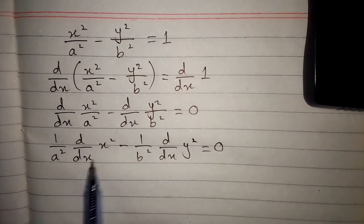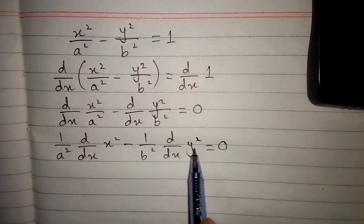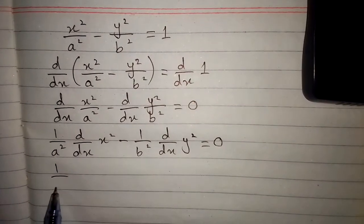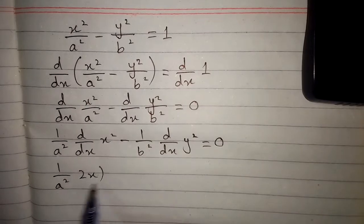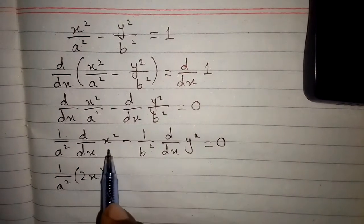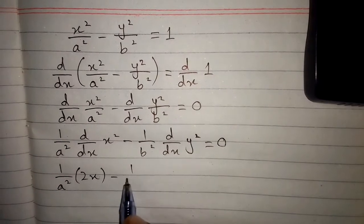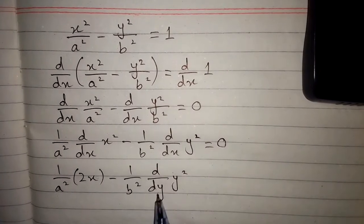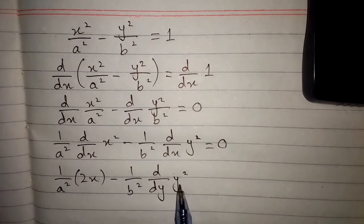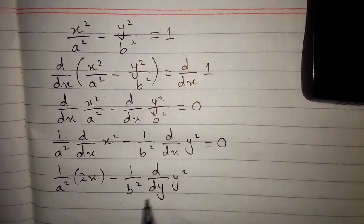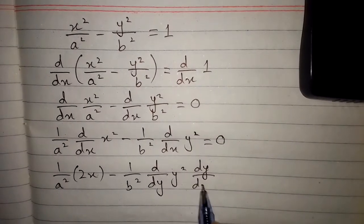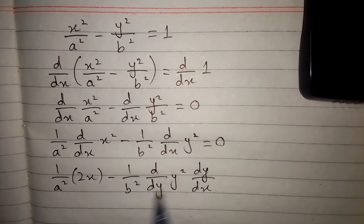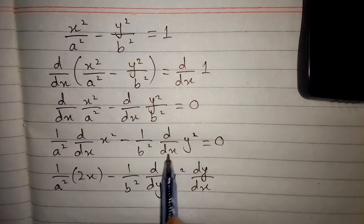Here we can differentiate x² with respect to x, but we cannot differentiate y² with respect to x directly, so we will apply the chain rule. We write (1/a²)·2x minus (1/b²)·(d/dy of y²)·(dy/dx), where the dy's cancel to give d/dx.